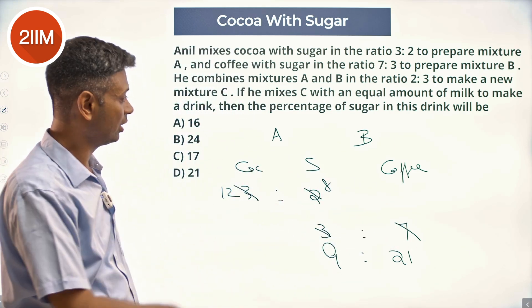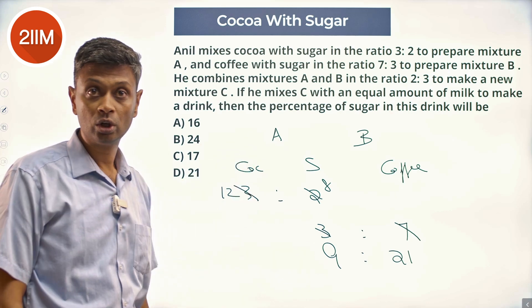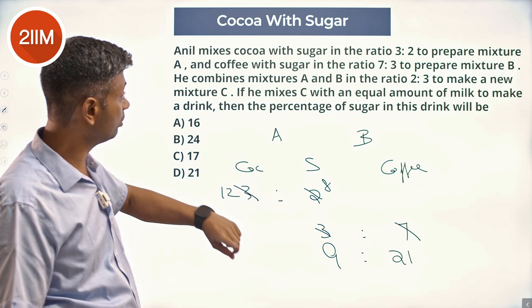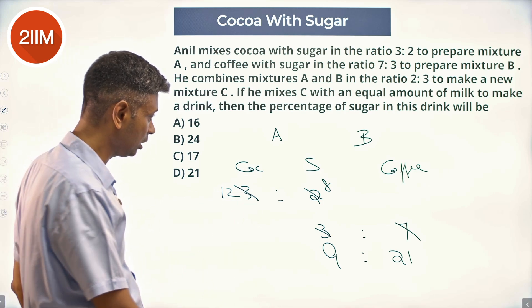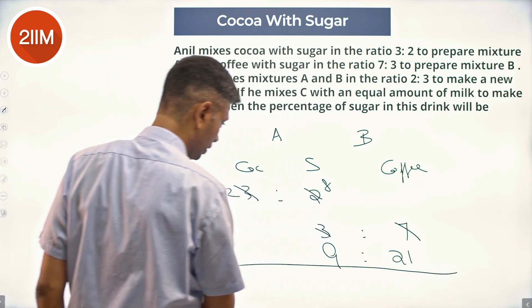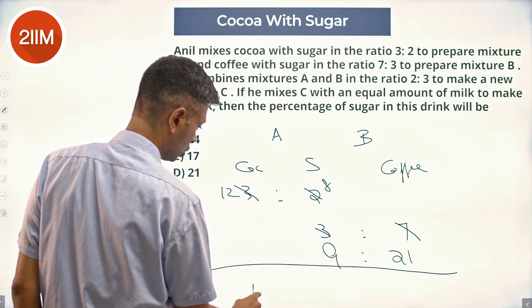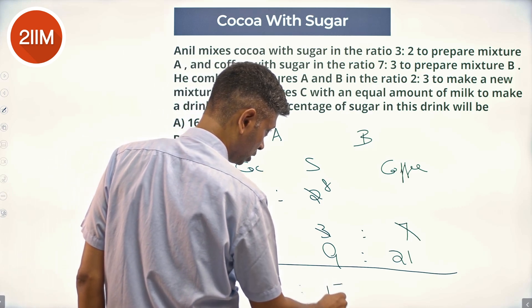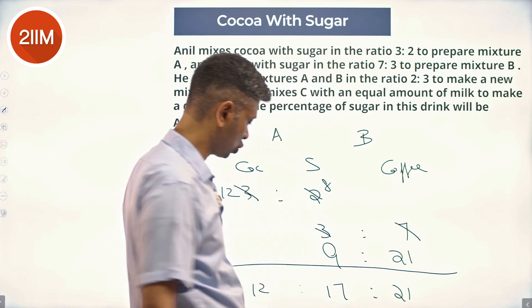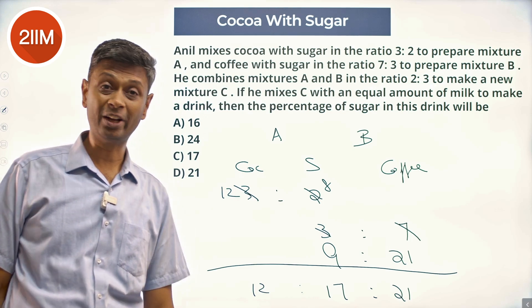Both in the given question, the total is in the ratio 2:3, mixing A and B. Then he gets C. That will have cocoa to sugar to coffee in the ratio 12:17:21. Nice.